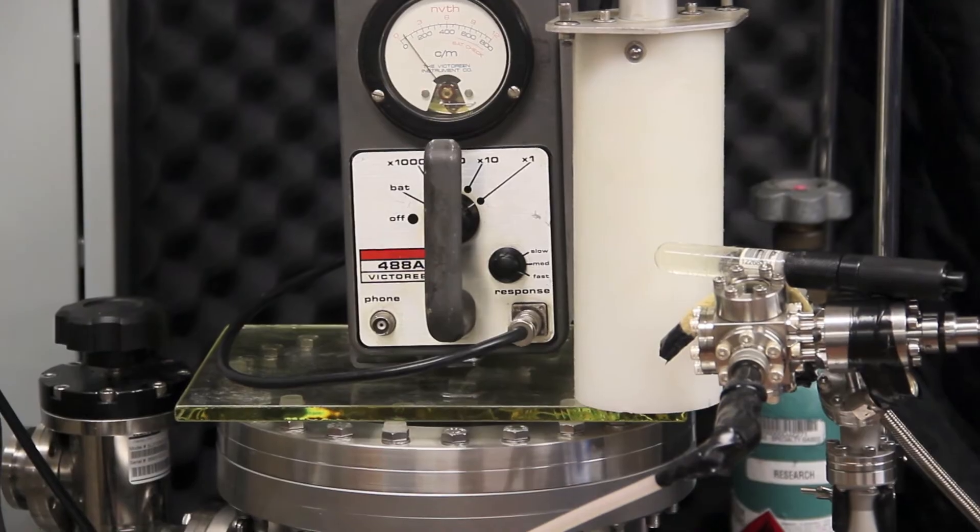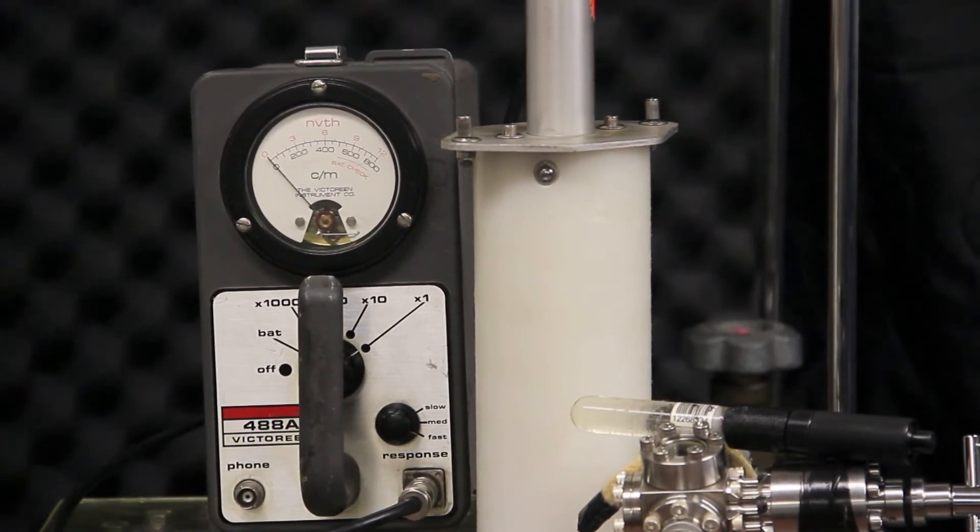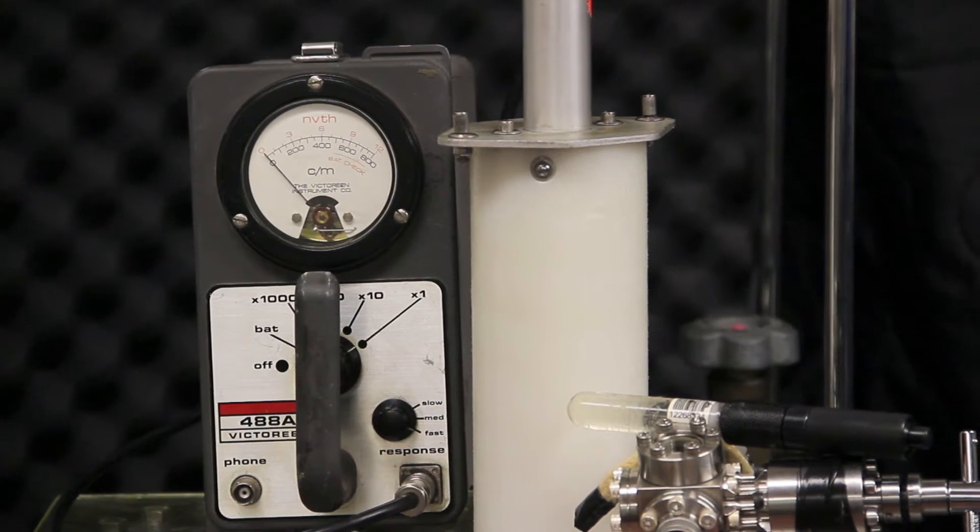For neutron detection, I'm using two methods this time. The Victorine model 488A, which is pictured on the left.